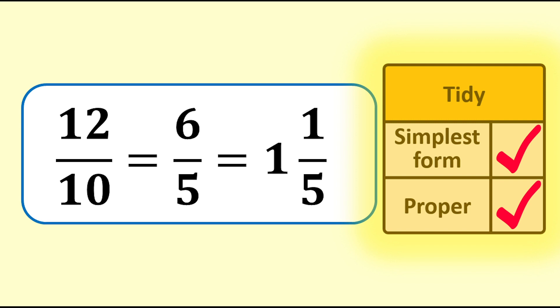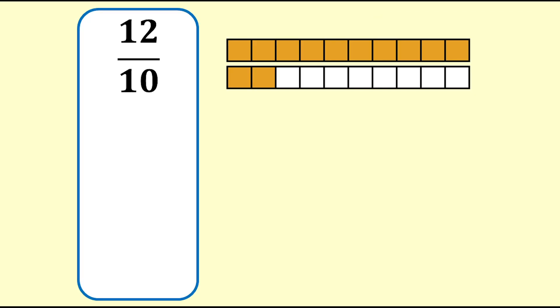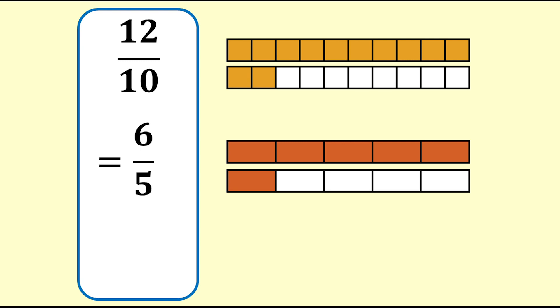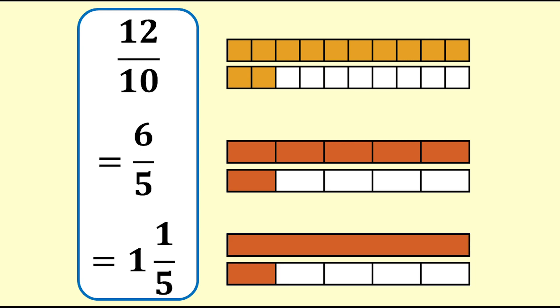The size of the fraction has not changed, but the way it is written can make it easier to see how much it is. You can see in the following sequence that the shaded area stays the same, while the description or label changes. 12 tenths equals 6 fifths, which equals 1 and 1 fifth.